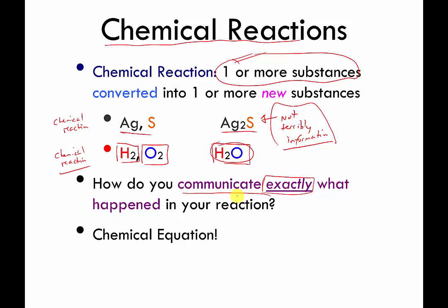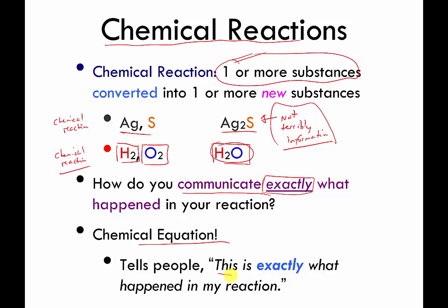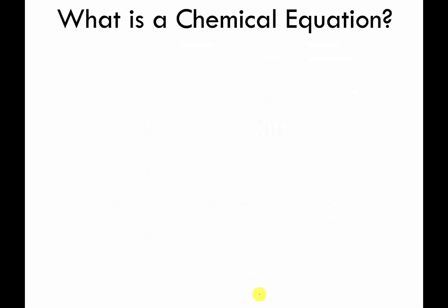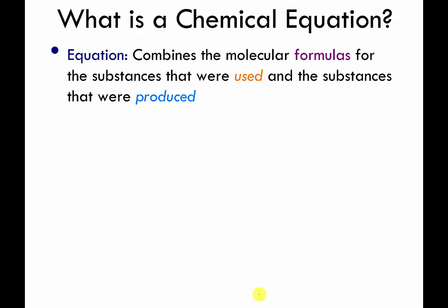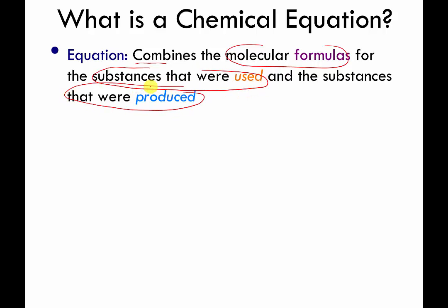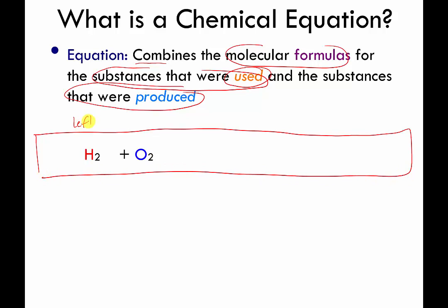The traditional way to communicate this is to make something called a chemical equation. The equation says more precisely what happened in the reaction. The formulas for all materials you used are written on the left side. For example, on the left side I have an H2 molecule and an O2 molecule. If you have more than one substance, you write all the formulas on the left and separate them with plus signs. Since there are only two materials here, I just need one plus sign.